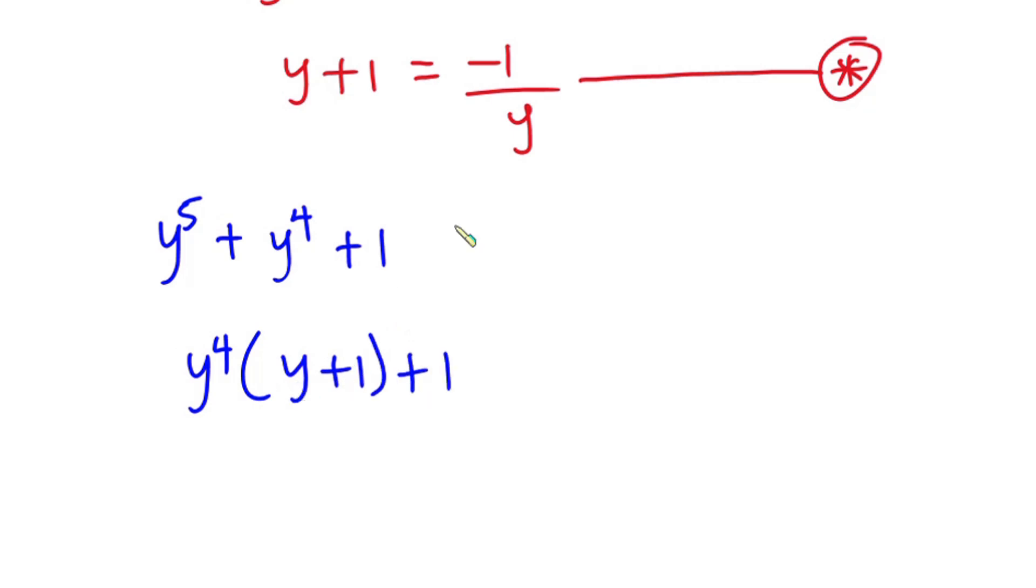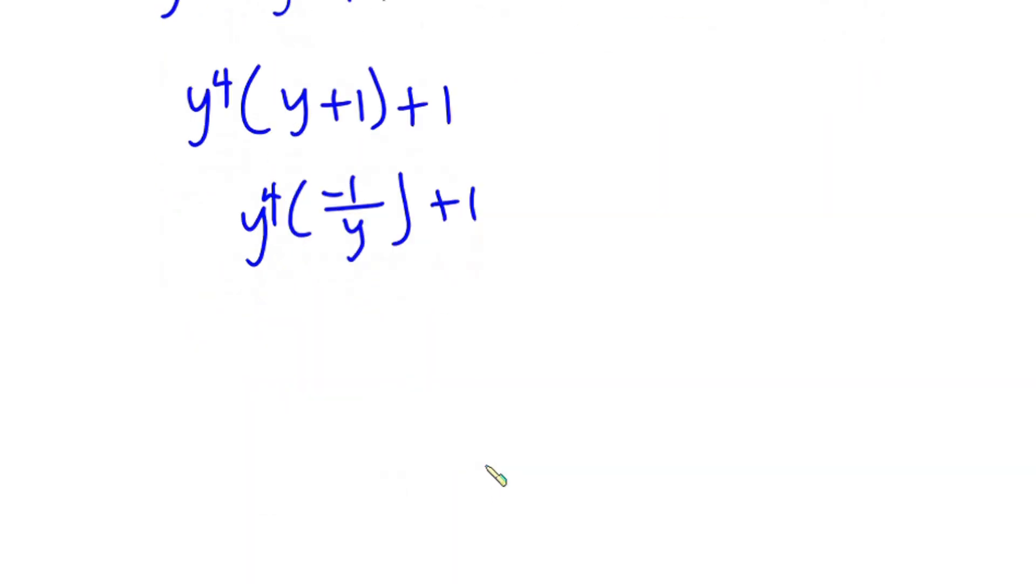Right, but we know y plus 1 to be negative 1 over y from equation star. So in place of this y plus 1, I'm going to put negative 1 over y. So we have y to the fourth power into negative 1 over y, then plus 1.